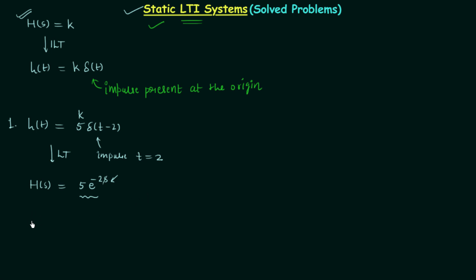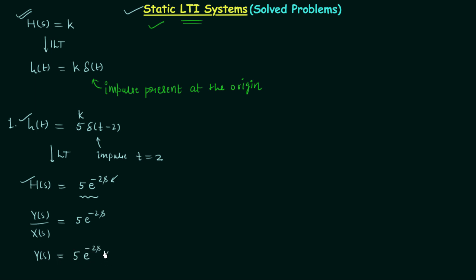Now we will find the relationship between output and input — I am doing this just to explain the complete process. H(s) = Y(s)/X(s) = 5·e^(−2s). Multiplying both sides by X(s) gives Y(s) = 5·e^(−2s)·X(s). Transforming back to the time domain via the inverse Laplace transform gives y(t) = 5·x(t−2).